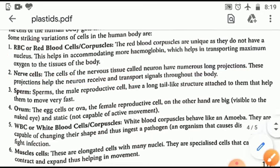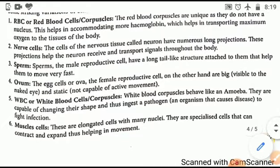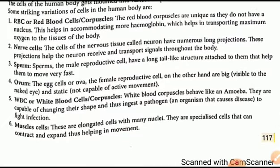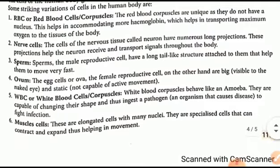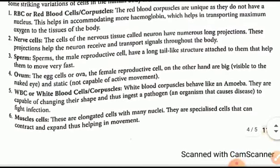Sperm are the male reproductive cells or gametes. Ovum — the egg cells or ova — are the female reproductive cells or gametes. On the other hand, ova are big, visible to the naked eye, and static, meaning they are not capable of active movement. So only sperm can move, not the ovum.